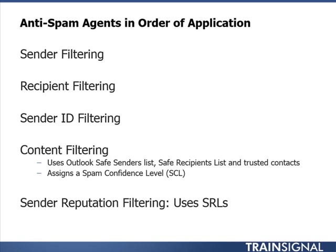Some other things used with content filtering include the Outlook Safe Senders list, Safe Recipients list, and Trusted Contacts. Ultimately it assigns a spam confidence level, or SCL. Another anti-spam agent is Sender Reputation Filtering. This collects information about recent email messages received, and if a sender appears to be the source of junk email, the address is added to a list. There's flexibility in the length of time a sender can be blocked, and you can enable or disable open proxy testing. The filter creates a Sender Reputation Level, or SRL, ranging from 0 to 9.